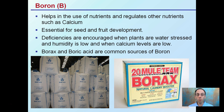Starting with boron, represented by the letter B. This helps in the use of nutrients and regulates other nutrients — calcium, for example. Boron and calcium levels are often compared because boron can influence the availability of calcium. It's essential for seed and fruit development. Deficiencies are encouraged if plants are water-stressed, humidity is very low, or if soil calcium levels are low.